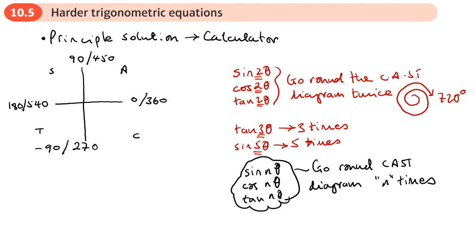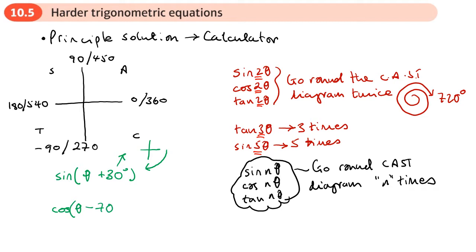Otherwise we could end up losing solutions. If you have something like sin(2θ + 30), or let's say sin(θ + 30) — if you've got a number added like this, you need to go back in your CAST diagram, so you do need to go backwards. And if I had something like cos(θ − 70), in your CAST diagram you need to go a bit further than you'd normally do. That's so that we don't lose solutions. So just be aware that you need to go around the CAST diagram more times than you've been used to.